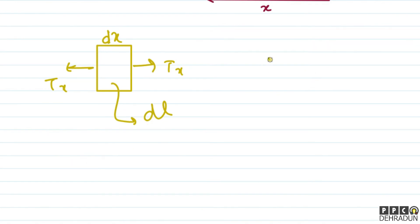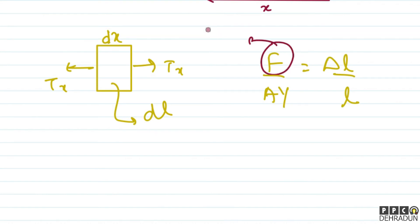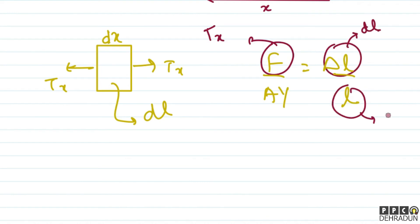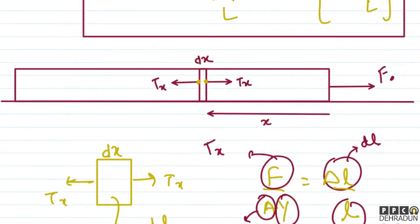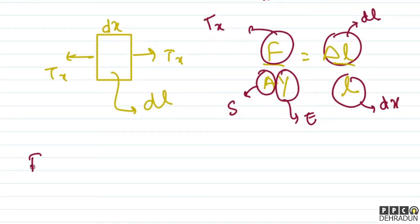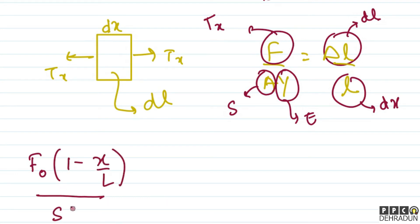To find the strain, we know the formula: F upon AE is equal to dL upon L. For this particular diagram, T(x) plays the role of force, dL plays the role of elongation, dx plays the role of L since we are looking at the increment in dx. The cross-sectional area given in the problem is S and Young's modulus is E. So we write: dL equals F0 × (1 − x/L) divided by S·E.